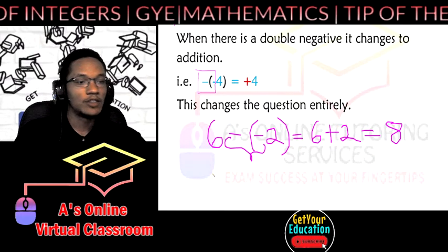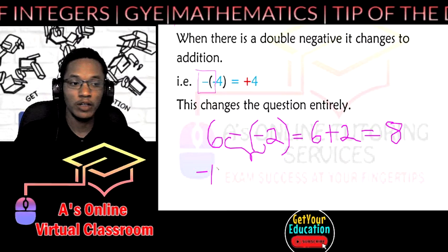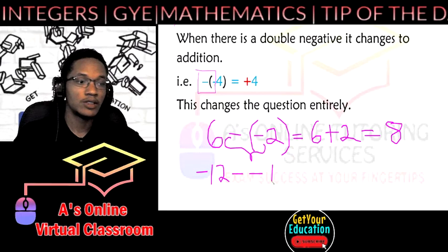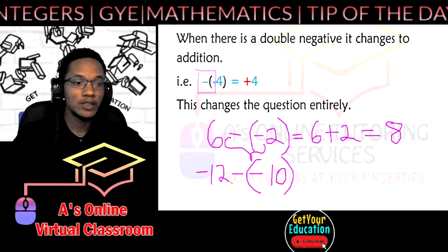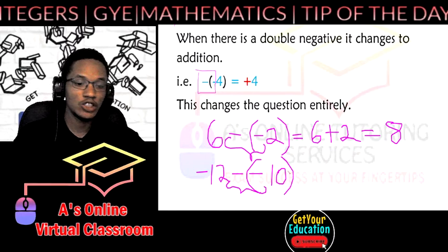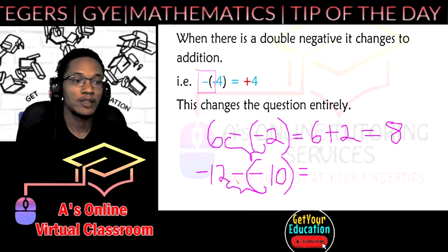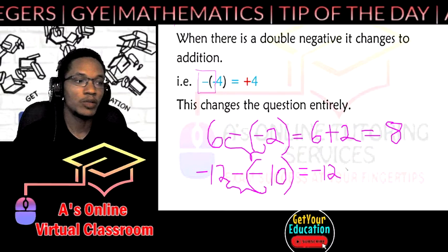If we have a number like negative 12 take away negative 10, once there's a double negative it changes the question and this is no longer negative 12 take away negative 10, it changes to negative 12 plus 10.